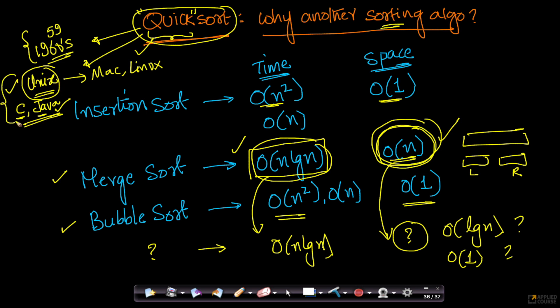So in the early operating systems and programming languages, in the early versions at least, in the early versions of Unix, C and Java, whenever we said sort, they were actually internally implementing QuickSort. That is how powerful QuickSort is.